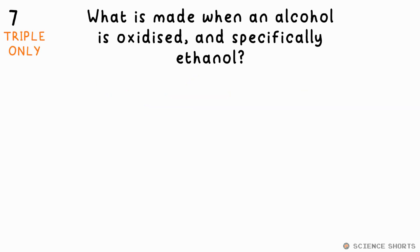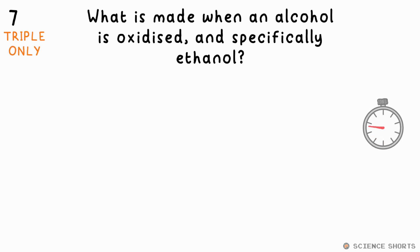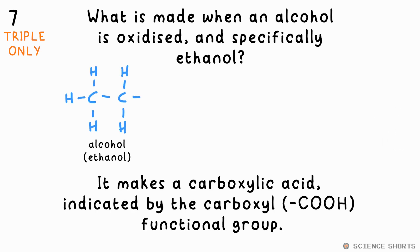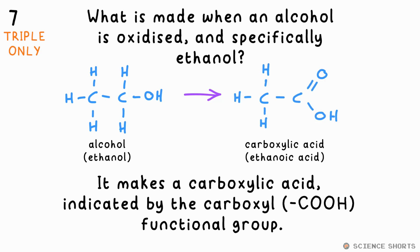If an alcohol is oxidized, what does it produce, and what would ethanol become? When an alcohol is oxidized, oxygen is added to change the functional group to COOH, with the added oxygen double bonded to the carbon. This is now a carboxyl functional group, which indicates we now have a carboxylic acid. The one made from ethanol we call ethanoic acid — that's vinegar.